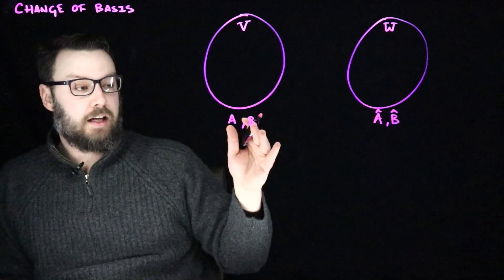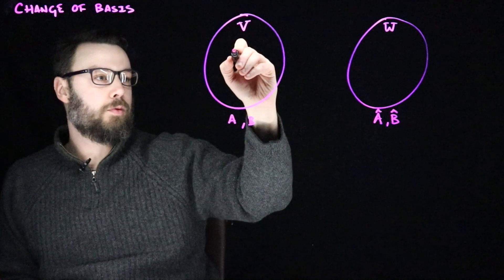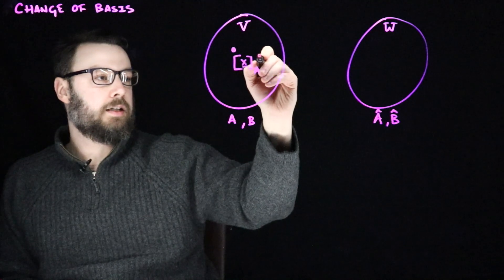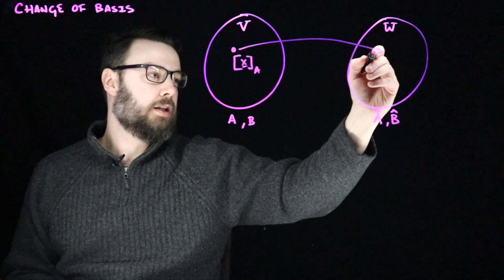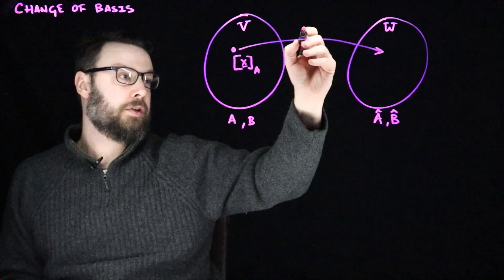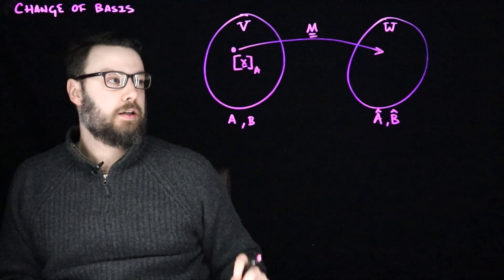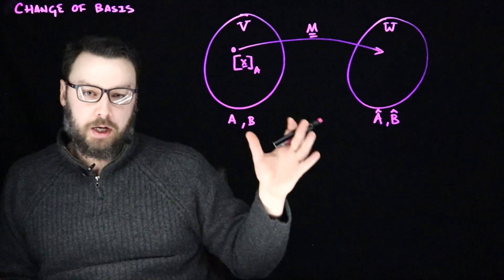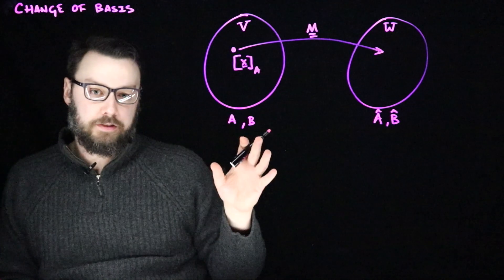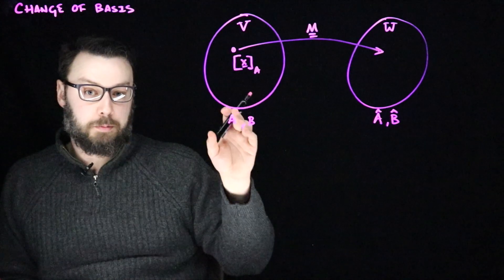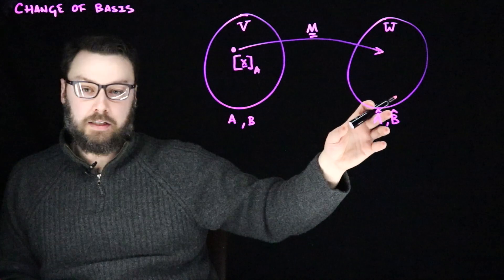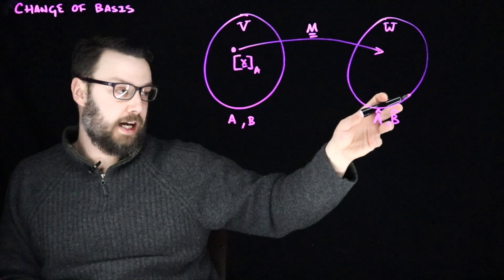And let's further imagine that Alice has a transformation that takes a point, let's call it X in basis A, and turns that into a point in her basis A hat, but now in W. And let's imagine that that's some matrix M. How would Bob use this matrix? How would he use this transformation? If he wanted to take his vectors represented by the coordinates in basis B, and then apply the linear transformation M somehow, and then get back into his representation B hat, how would we do that?